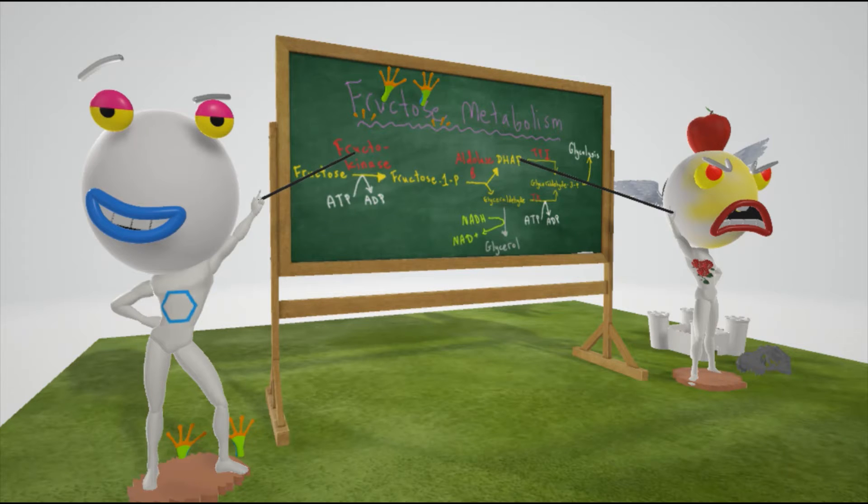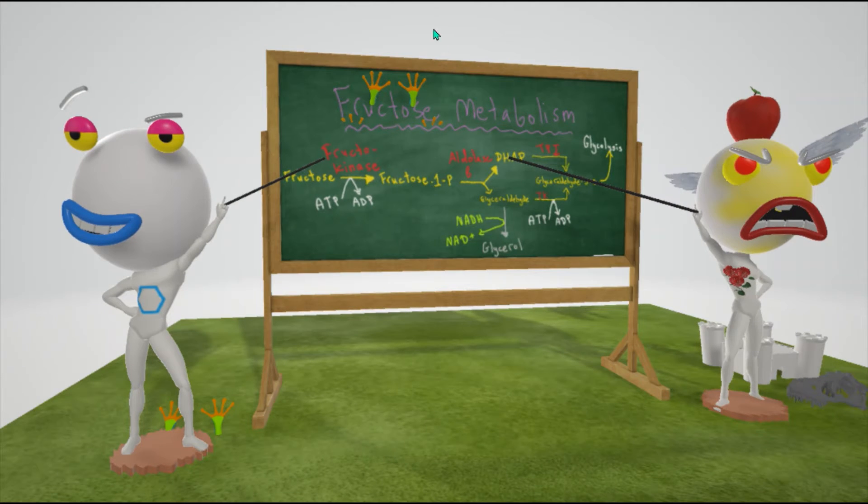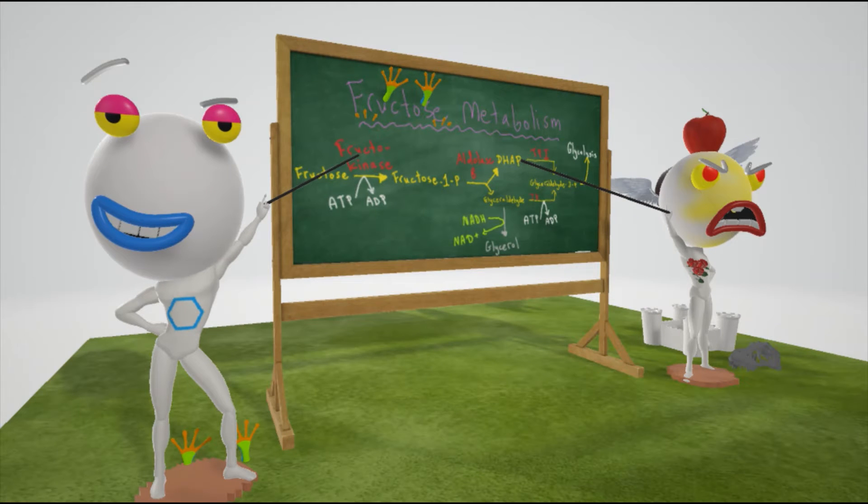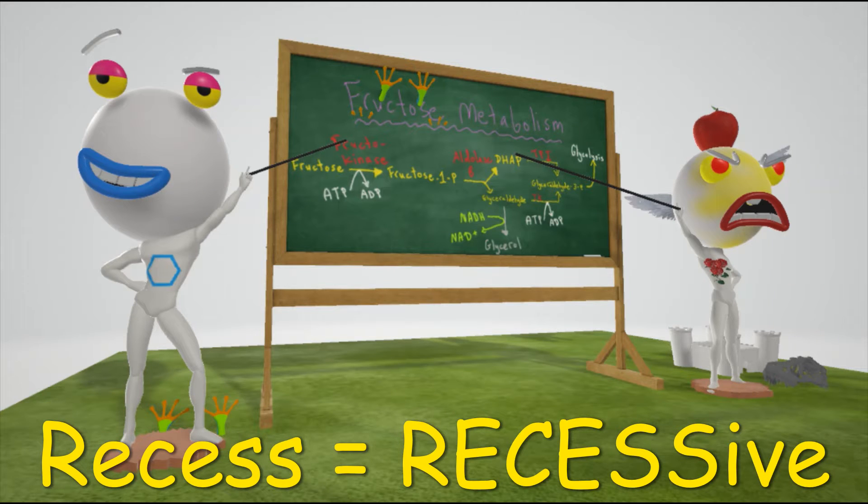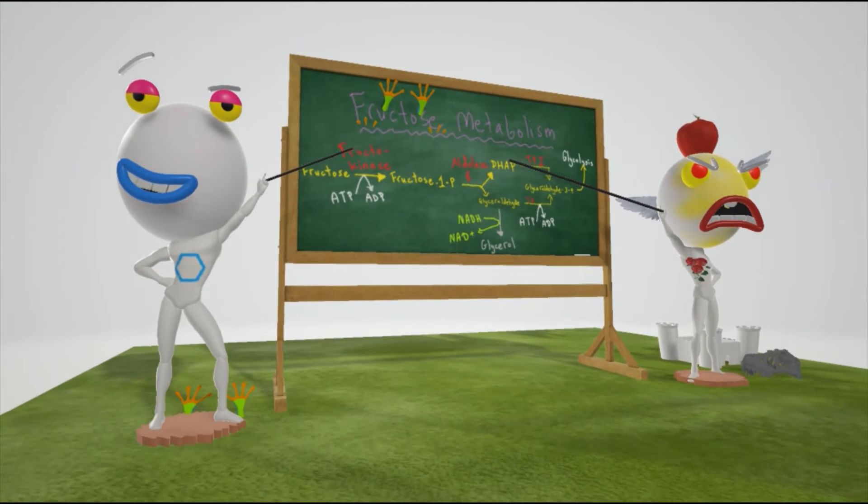Fructokinase deficiency is kinder, since fructose is not trapped in the cells. It only becomes trapped in the cells when it becomes converted to fructose 1-phosphate, but that's not happening here because we don't have fructokinase. Therefore, this is a benign asymptomatic condition. Final note is that it is autosomal recessive, represented by this teacher standing on this Reese's chocolate. Reese's shows up in our autosomal recessive scenes.